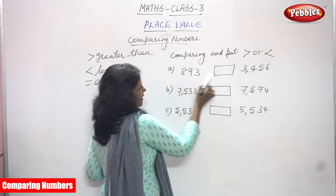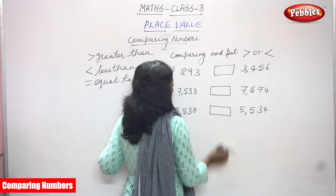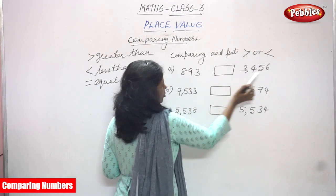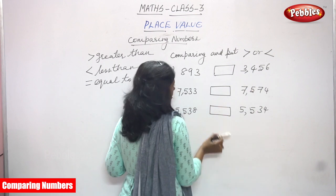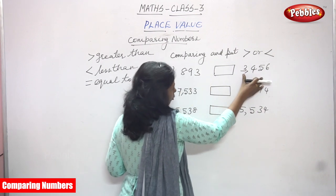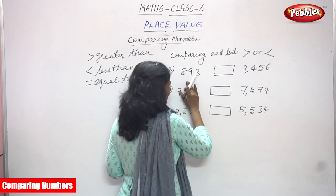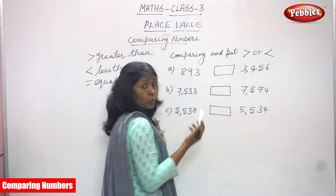So 893 and 3456. This is ones, tens, hundreds — a three-digit number. This is ones, tens, hundreds, and thousands — a four-digit number.